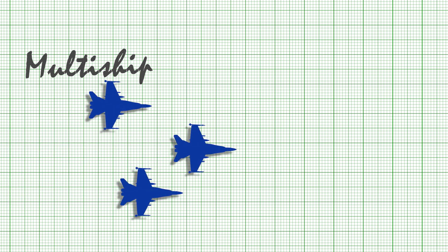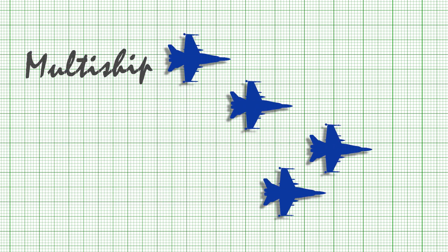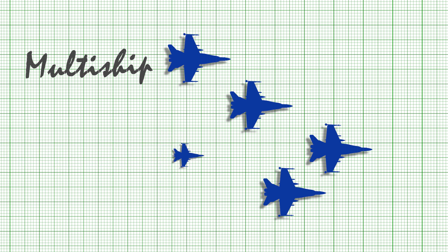Multi-ship. A multi-ship formation is a formation comprised of more than two aircraft. The terms three-ship or four-ship may be used to describe three or four aircraft respectively in formation. Multi-ship formations can extend past four aircraft, but tactically four is the largest multi-ship formation you would ordinarily encounter.